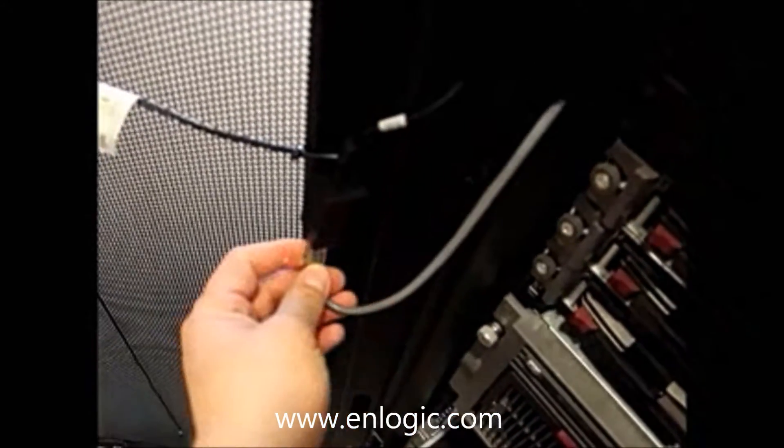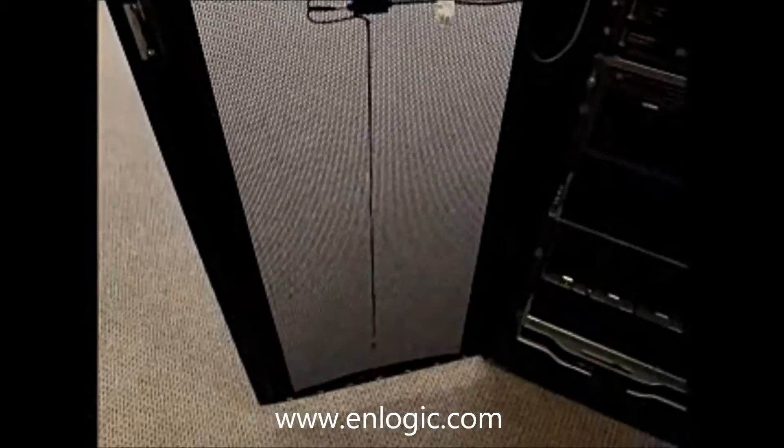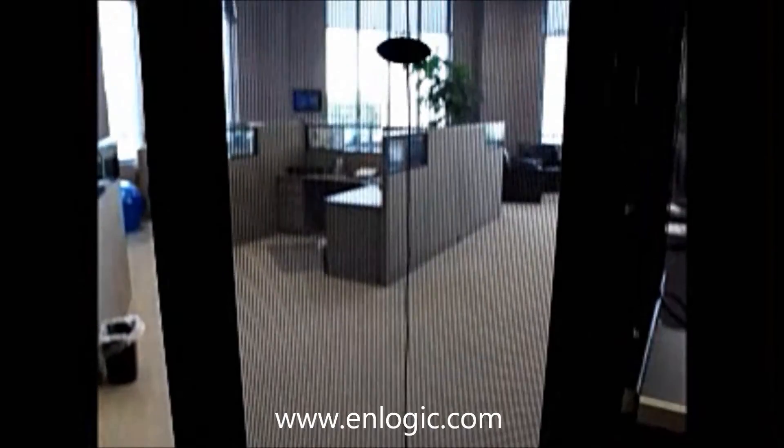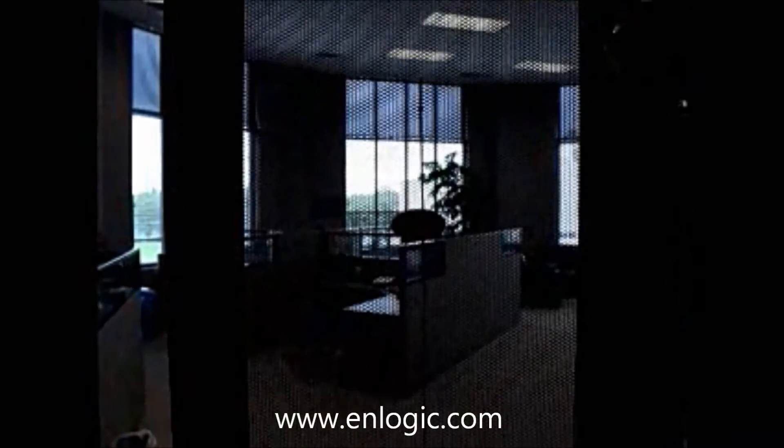And then when you put the door back on, you just put the RJ-485 cable back in and you're back in business, because your sensor is connected to the PDU. So that's the simplest way to connect the 3T plus H sensor to the Enlogic PDU.